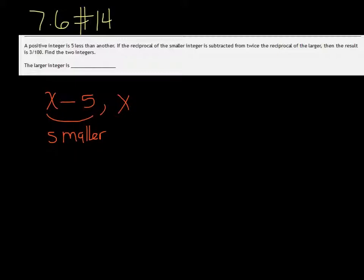Okay, so let's read that again. If the reciprocal of the smaller, so that would be 1 over x minus 5, is subtracted from, now from is a key word here that means it's coming from the reciprocal of the larger, twice the reciprocal of the larger, so that would be 2 over x. Then the result is 3 over 100.